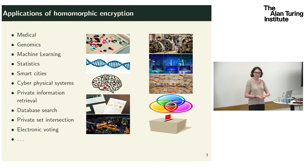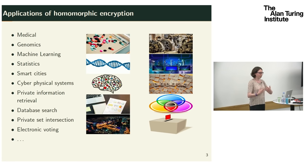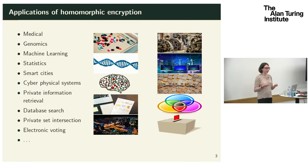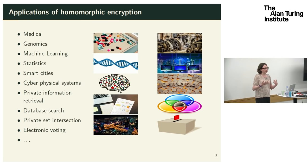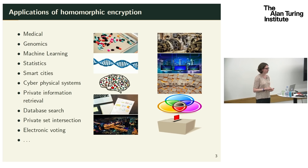There are really many applications for homomorphic encryption. A general theme is trying to obtain insights from data which you otherwise couldn't access due to privacy or legal concerns — things like aggregation, machine learning, or statistical analysis on data sets. For example, with medical data sets, you could learn correlations between illnesses or effectiveness of drugs, even without direct access to the data.